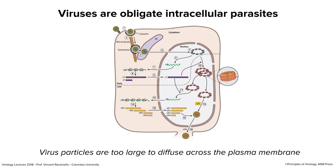The problem is viruses can't diffuse in — they're too big to diffuse across the membrane. In order to undergo their reproductive cycle, they have to be taken up. Cells have active processes for taking up materials from the extracellular media, whether small molecules, water, gases, or very large proteins — there are mechanisms by which they get in. Viruses have evolved to take advantage of those processes.